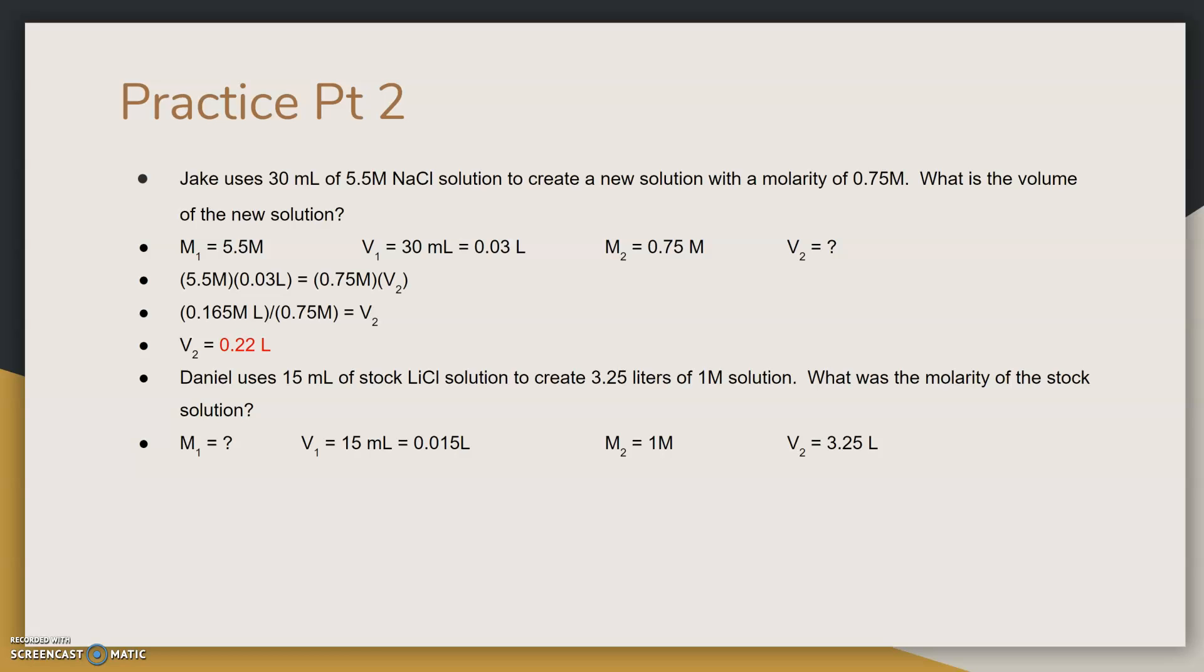You'll notice that the missing variable is M1. You'll also notice that we have one unit that's out of sort, which is the milliliter, the 15 milliliters. So we have to convert that into liters by dividing the 15 by 1000.